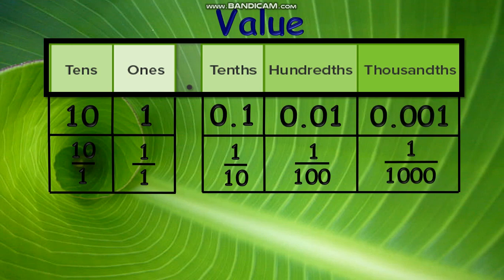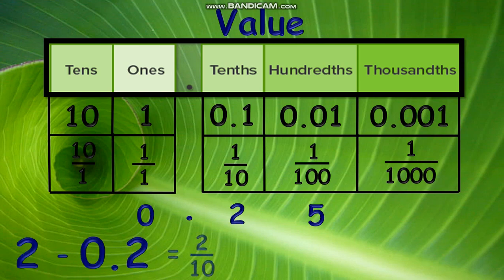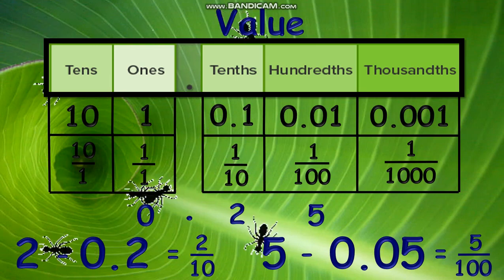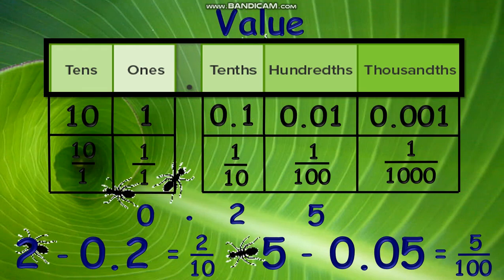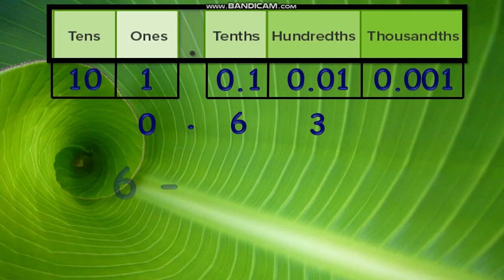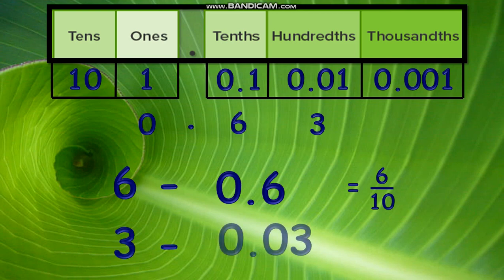An example is 0.25 — the value of 2 is 0.2 or two tenths, while 5 has a value of 0.05 or five hundredths. Another example is 0.63, where 6 has a value of 0.6 or six tenths, and 3 has a value of 0.03 or three hundredths.